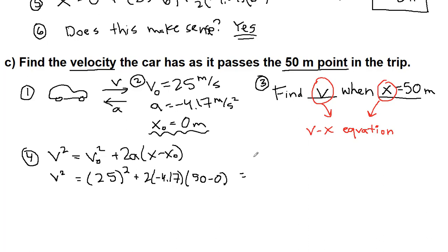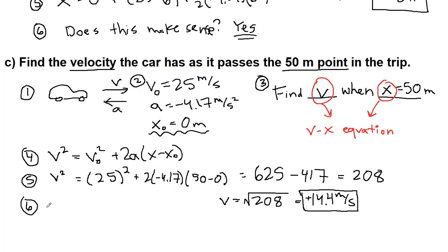All right. So, we are going to write out the two terms separately so I can comment on something important here. All right. So, 25 squared is 625. And 2 times negative 4.17 times 50 is 417. So, what we have at this point is 208. And that was equal to V squared. A lot of students forget to then take the square root. And that gives us 14.4 meters per second. We're still driving to the right, so it's positive. All right. So, that was our step 5 of doing all the math.